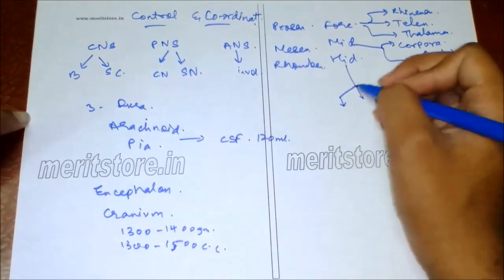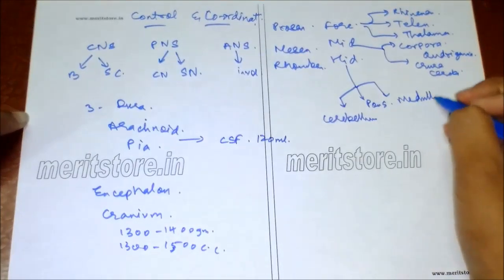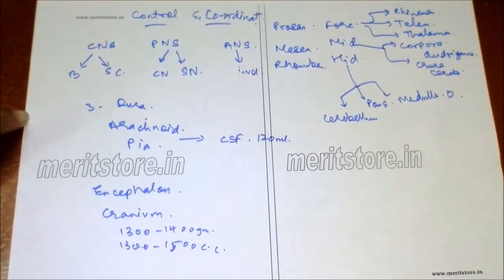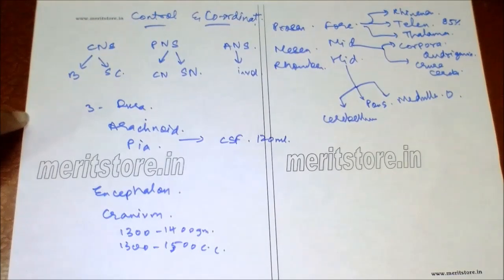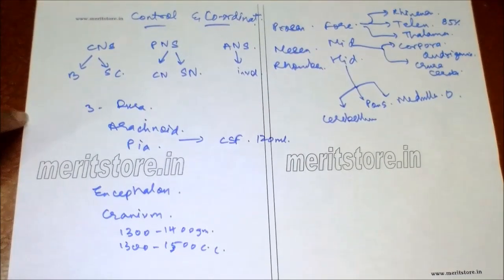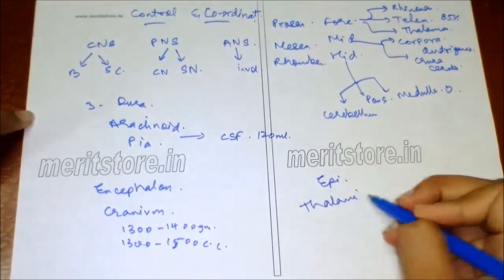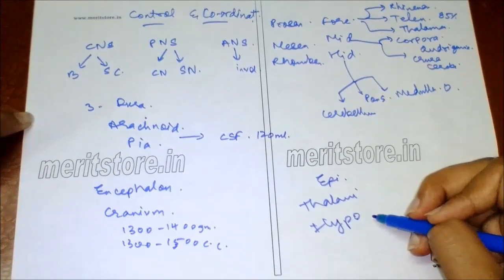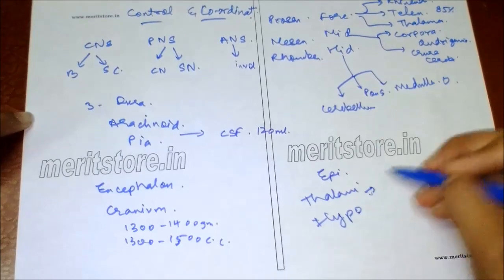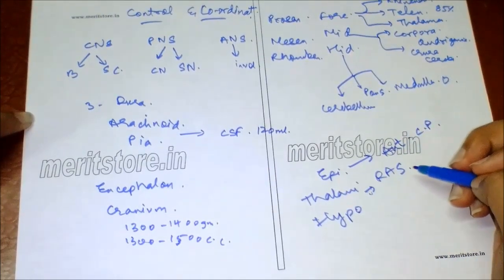The hindbrain is divided into cerebellum, pons, and medulla oblongata. The cerebrum comprises 85% of the brain and controls thinking, voluntary activity, memory, willpower, intelligence, reasoning, and emotions. The diencephalon consists of epithalamus, thalamus, and hypothalamus. The hypothalamus (floor of diencephalon) controls and releases many hormones including releasing and inhibiting factors. The thalamus controls the reticular activating system; the epithalamus (roof) forms the anterior choroid plexus.